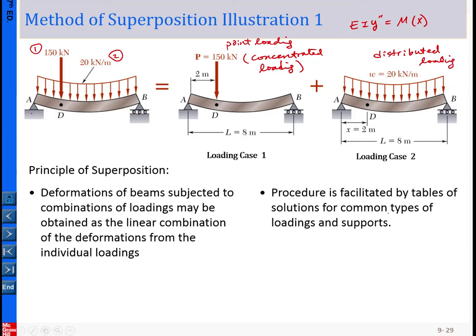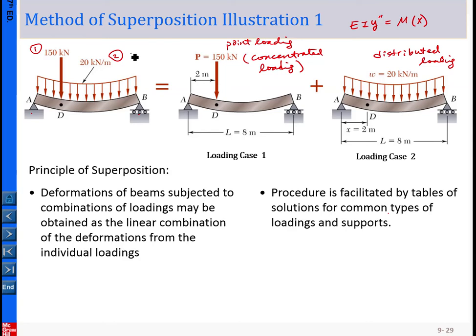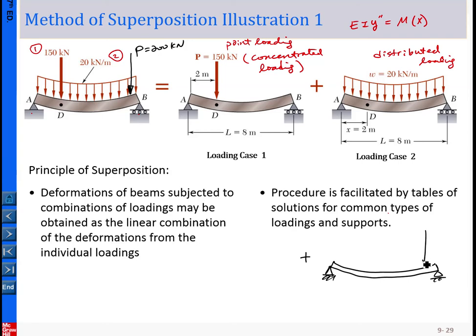Basically, here we can decompose the loading. To make things more complicated as an example: if we have an additional point load, say P equal to 200 kilonewtons, then of course you can continue to add the additional case. So that is a third case with 200 kilonewtons. You can continue — depending on how many types of loading you have, you can continue to decompose. That is the first application of the method of superposition.